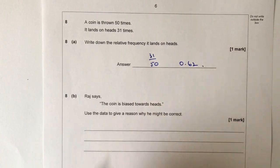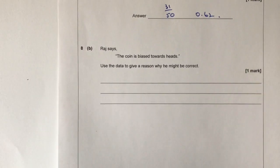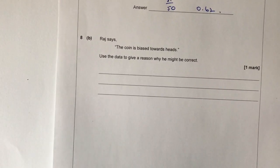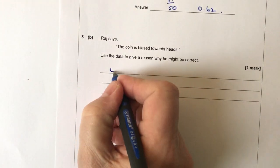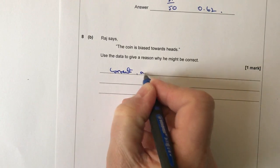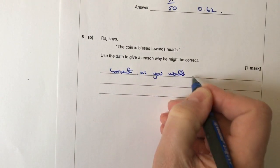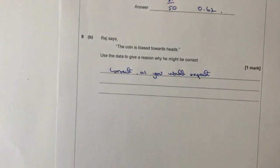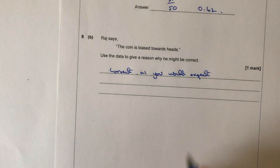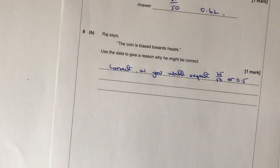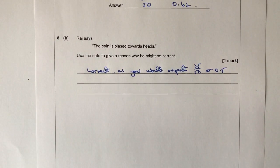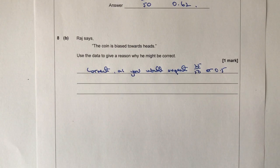Raha says the coin is biased towards heads — use the data to give a reason why he might be correct. He could be correct because you would expect heads to appear 25 out of 50 times (probability 0.5), but it's actually landing on heads more frequently than tails according to the data, suggesting a bias towards heads.